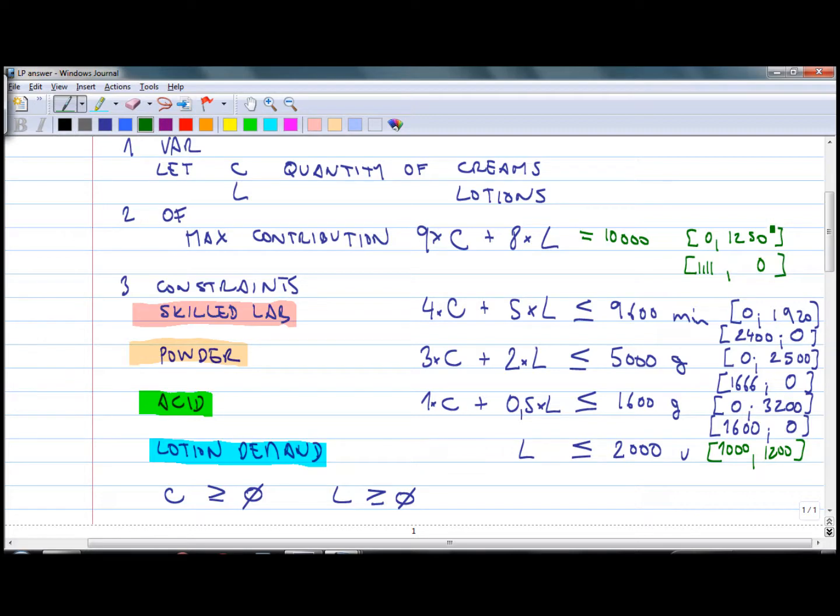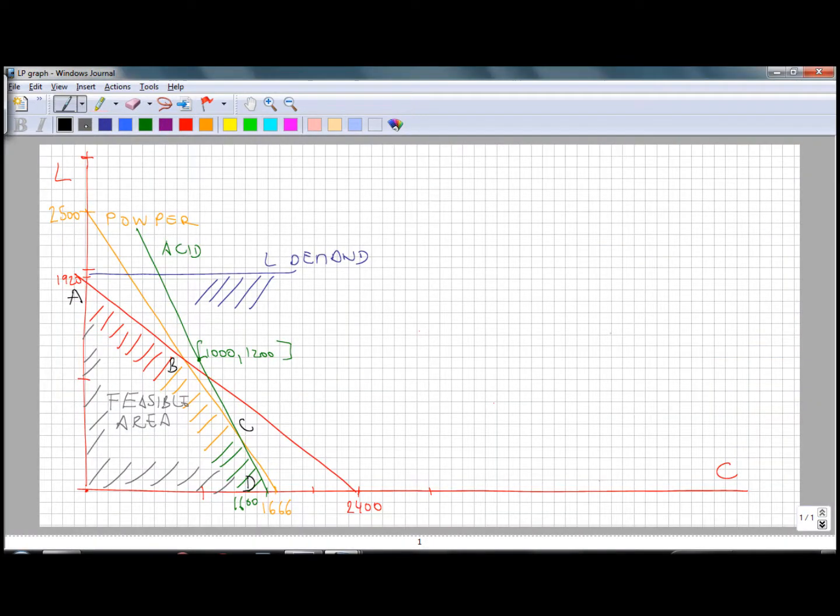Let's put these two points on the graph and connect them. Here is 1101, 1250. The black line represents the contribution equal 10,000 for different quantities of C and L. This is likely not the optimum solution because there are points above that line. We could try to find some other higher value of contribution.